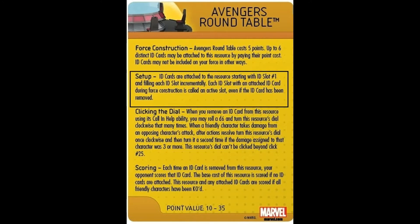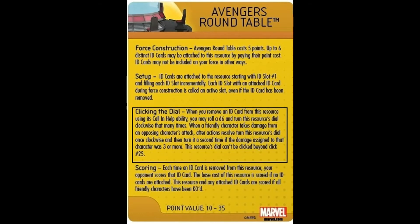The setup is relatively simple. You have the option to fill up each slot with an Avengers ID card resource. At setup, all the slots that are filled with cards are considered active, while the empty slots are considered inactive. In order to click the dial, you must first meet one of the requirements. When you remove an ID card from the resource using the call and help ability located on the card, you may roll a D6 and turn the dial clockwise that many times. The word 'may' in this sentence means that it's purely optional, so if you're on a preferred click, you don't have to roll the dice. When a friendly character takes damage from an opposing attack, after actions resolve, turn the dial on the resource once clockwise. If your character took three or more damage, turn it once more a second time. Unlike the first option, this effect is mandatory, which means you have to turn the dial.